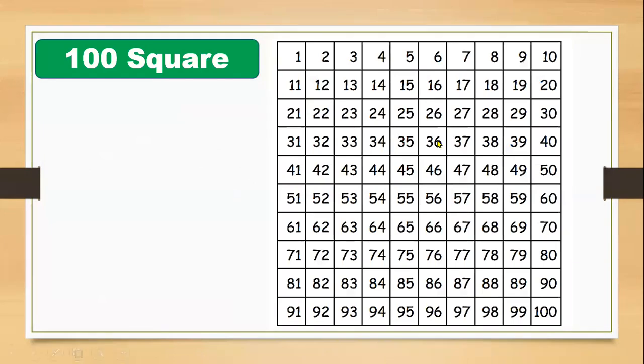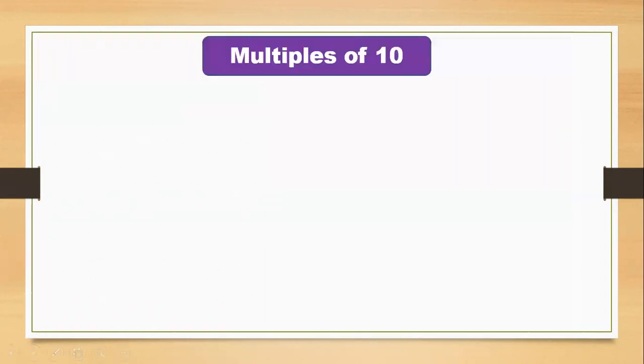This is the hundred square where you can find your multiples of tens: 10, 20, 30, 40, 50, 60, 70, 80, 90, and 100. We can find all the tens in this hundred square.